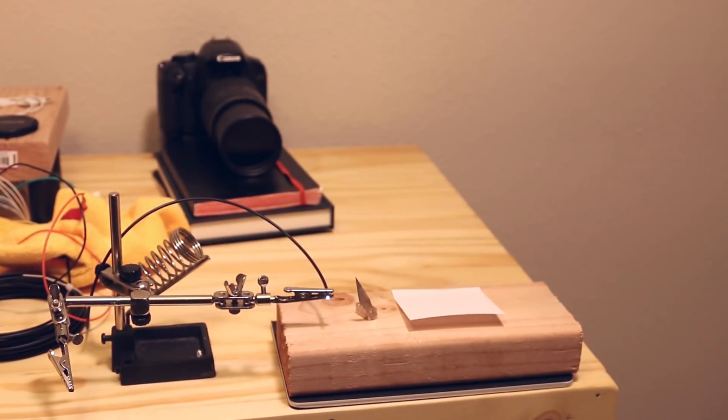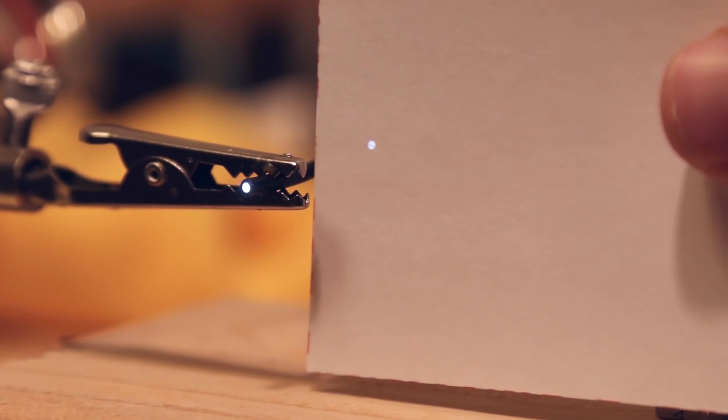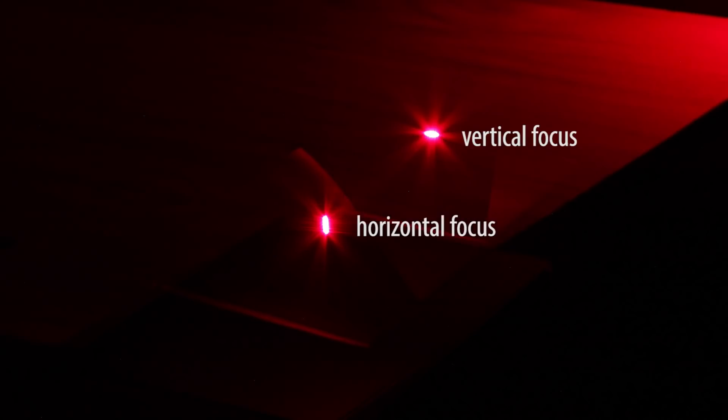When setting up a Schlieren system, it's paramount that the point source and focal point be co-located. Ideally the focal point will be as small as the point light source itself. The further these points are from one another, the more likely your optical setup will be subject to an astigmatism.